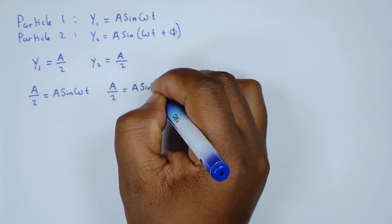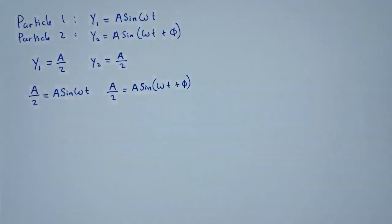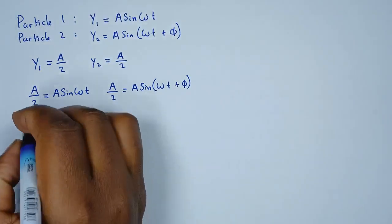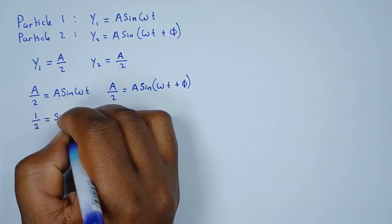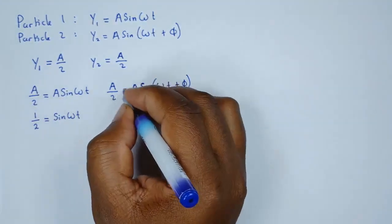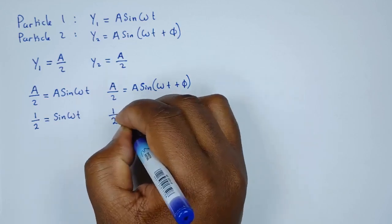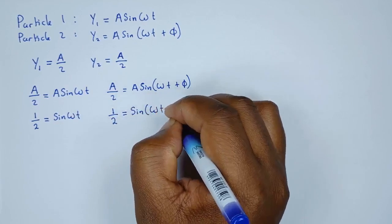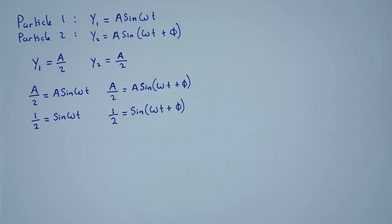We divide both sides by A. For particle one, the A cancels, leaving us with 1/2 = sin(ωt). For particle two, dividing both sides by A gives us 1/2 = sin(ωt + φ).